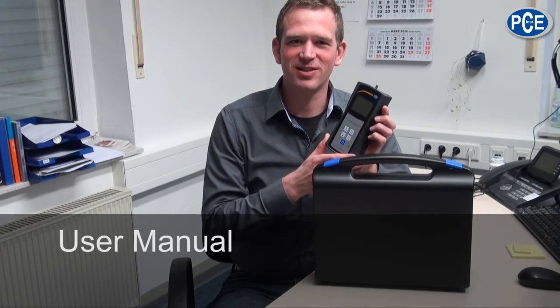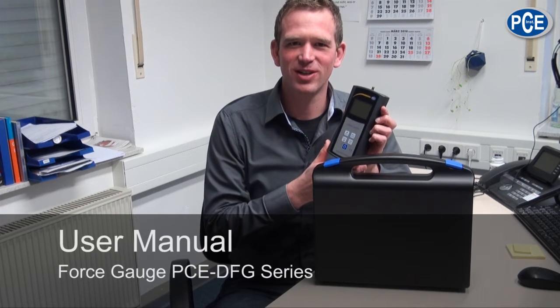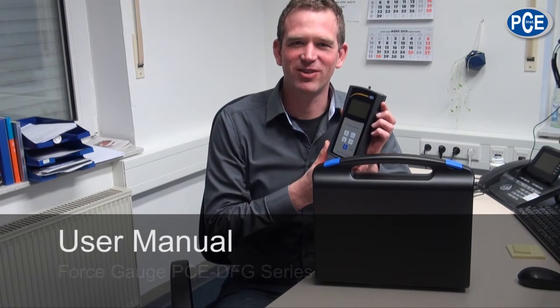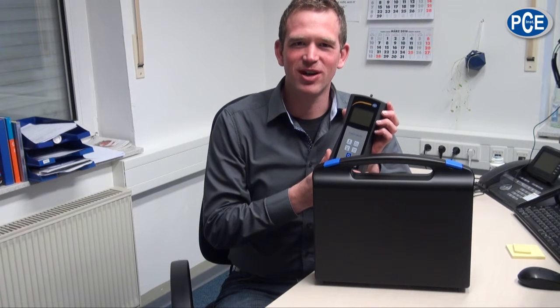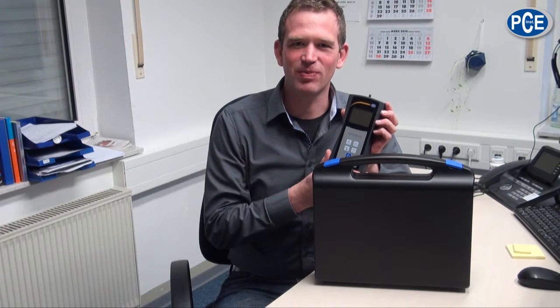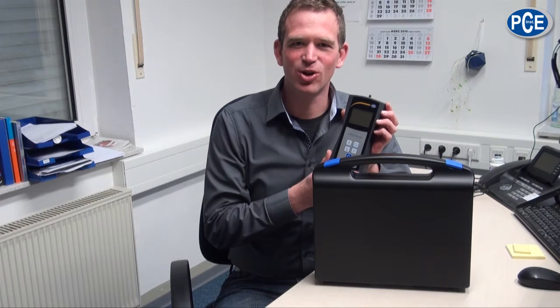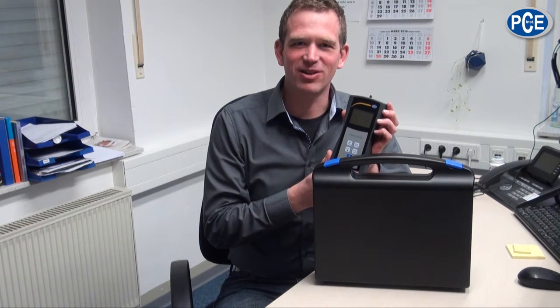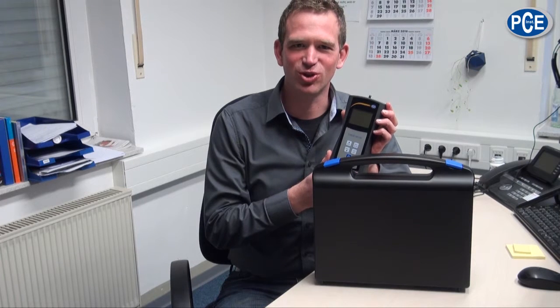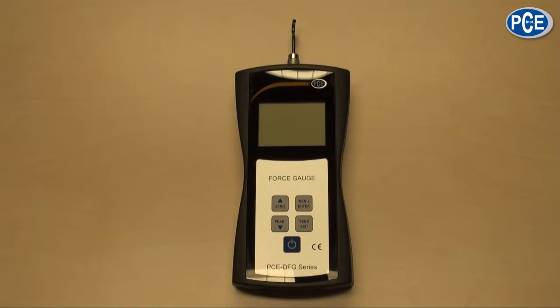The PCE DFG series has four models which have all different measuring end values. There are the models PCE DFG 5, PCE DFG 10, PCE DFG 20 and the number stands for the end measuring area in Newton.